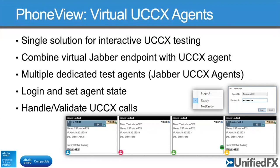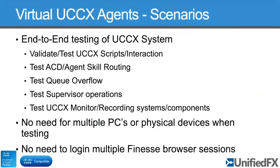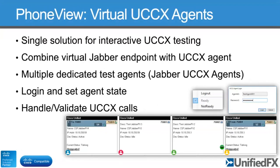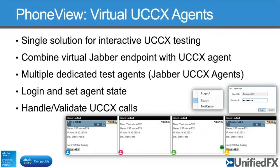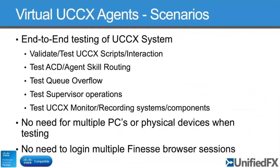If you combine agent support and virtual agents, here's a quick summary of the types of scenarios you can use that functionality for: you can validate and test new call scripts, make sure your routing works as expected, check if you've got queue overflows, check that supervisor actions do what you expect them to, and you can technically even test UCCX monitoring and recording systems because they're real Jabber devices that support supervision and monitoring. The key thing is there's no need for multiple PCs or people — just one application, one person.